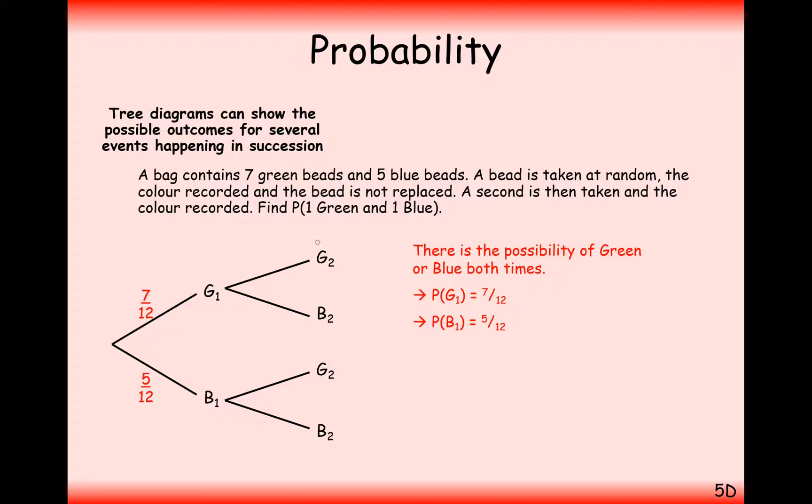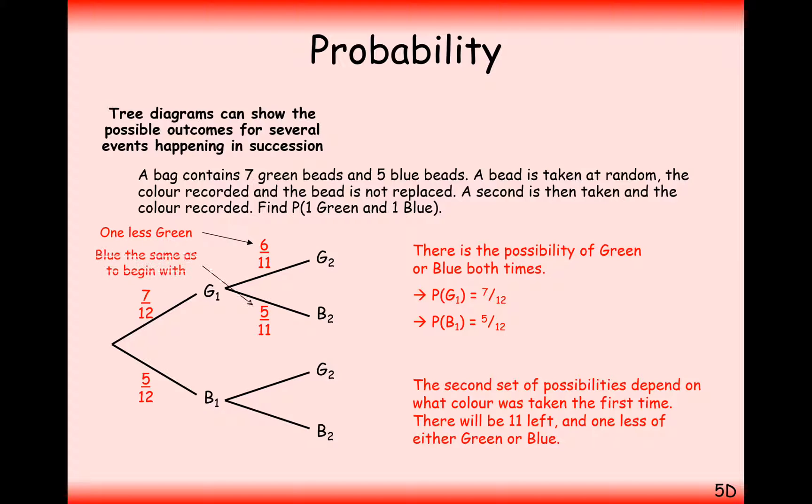Now the next probability is going to come on this branch here. We've already pulled a green one out of the bag and we've not replaced it. That's a key part of this question. So therefore we've only got six green beads in the bag left. And we've only got eleven beads in total because we've pulled one out and we've not put it back. So the second green probability is six out of eleven.